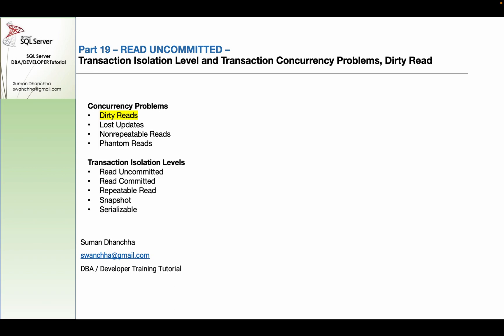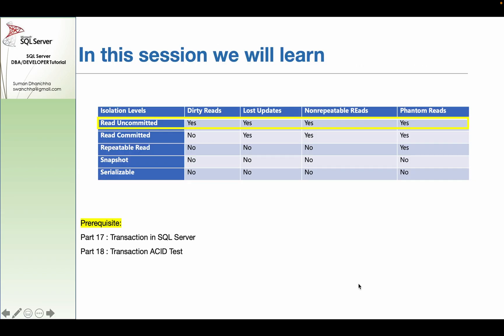We need to use isolation levels to solve concurrency problems. Read Uncommitted isolation level is the lowest level where every problem can occur: dirty reads, lost updates, non-repeatable reads, and phantom reads.